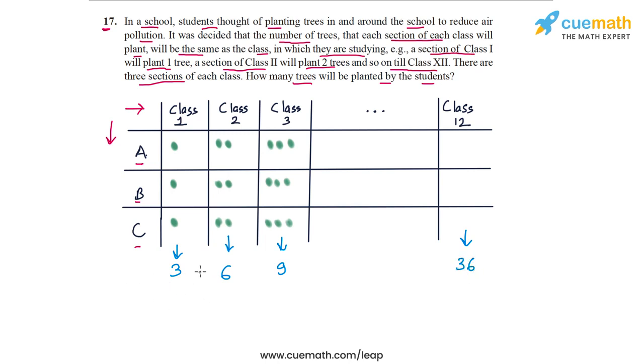Now all we have to do is add these numbers, and that will give us the total number of trees planted by the students. This is an arithmetic progression in which the first term A is equal to 3, the common difference D is equal to 3 as well, because the difference between any pair of consecutive terms is 3. And the number of terms is 12, because there are 12 classes from class 1 to class 12.